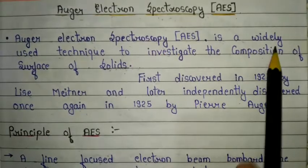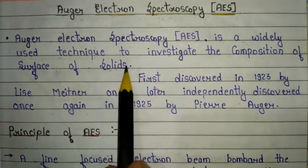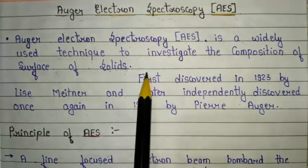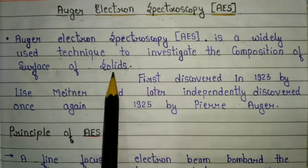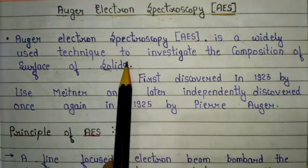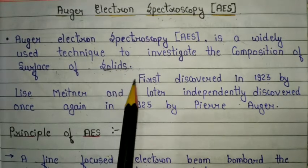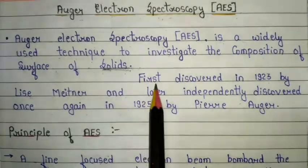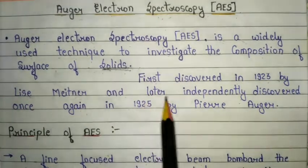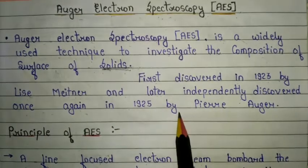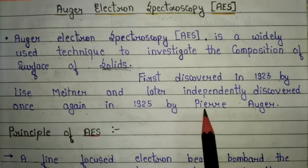Auger electron spectroscopy is a widely used technique to investigate the compositions of the surface of solids. In AES, we only use the solid form of sample. It was first discovered in 1923 by Lise Meitner and later independently discovered again in 1925 by Pierre Auger — that's why it is named Auger electron spectroscopy.